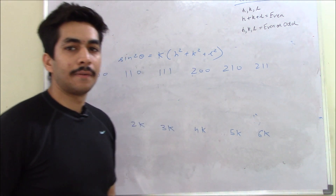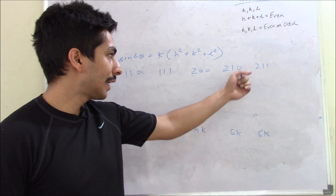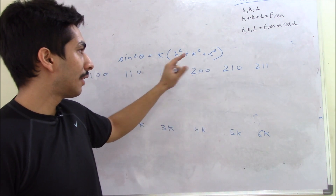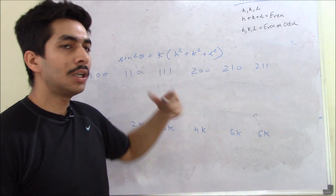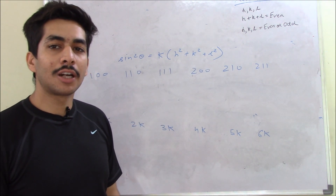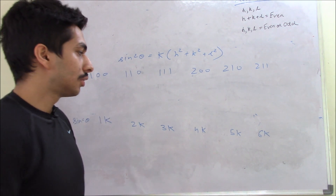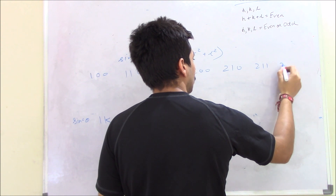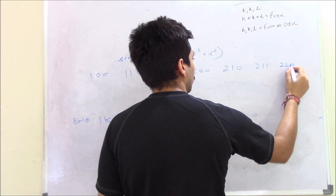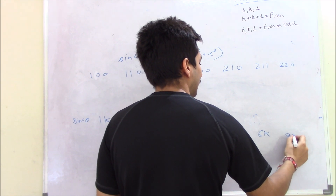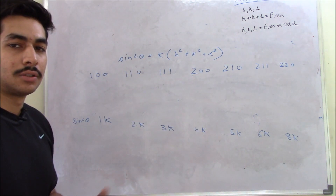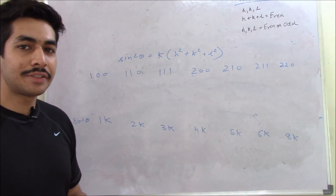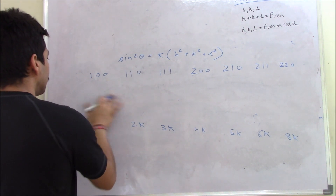We do not have a line at 7K. Why? Because if you try to arrange h, k, l such that h²+k²+l² equals 7, it will never come out to be 7. So 7K cannot be an answer. The next one we can have is (2,2,0), which gives 8K. So the sequence is 1K, 2K, 3K, 4K, 5K, 6K, 8K — we do not have 7K.